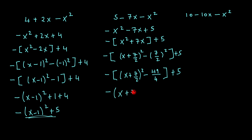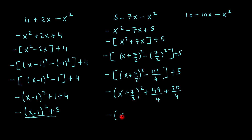So that will give me x plus 7 over 2 all squared, and negative times a negative gives me a positive, so that would be plus 49 over 4. And if I convert this into a fraction — 5 over 1 with a denominator of 4 — that would be plus 20 over 4. Then my final answer would be minus x plus 7 over 2 all squared plus 69 over 4. And that would be my final answer.